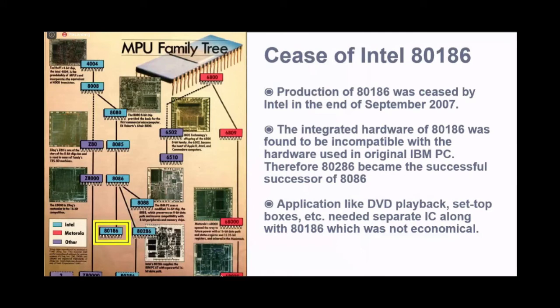Production of the 80186 was ceased by Intel in 2007. Now there are certain reasons for the discontinuity of this microcontroller or so-called microprocessor. The hardware of 80186 was not actually compatible with the hardware used in IBM PC. So ultimately, 80286 was the successor of 8086. Also, another drawback was that the application of 80186 in DVD playback, set-top boxes, and other accessories was not economical. It was due to the fact that the 80186 couldn't function fully without the aid of a separate IC.